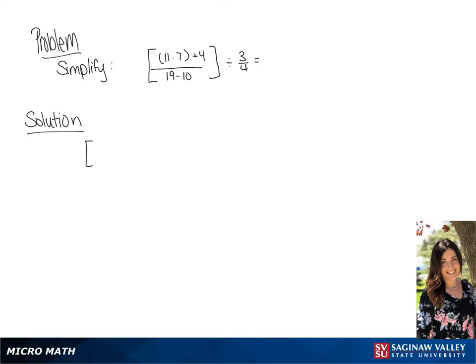We are going to simplify this using order of operations. The first thing we are going to simplify is the 11 times 7 in the parentheses that are within the brackets. And then we are going to address the brackets.